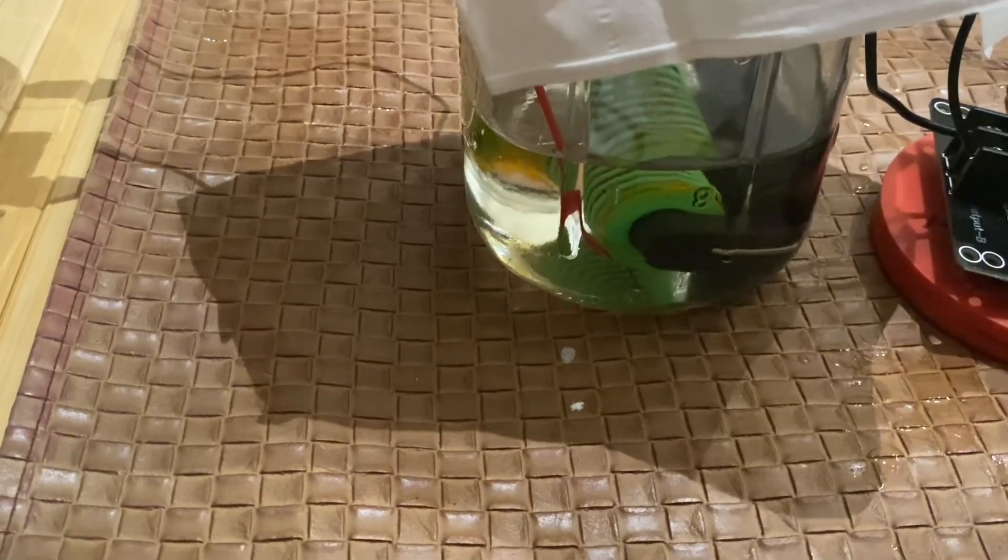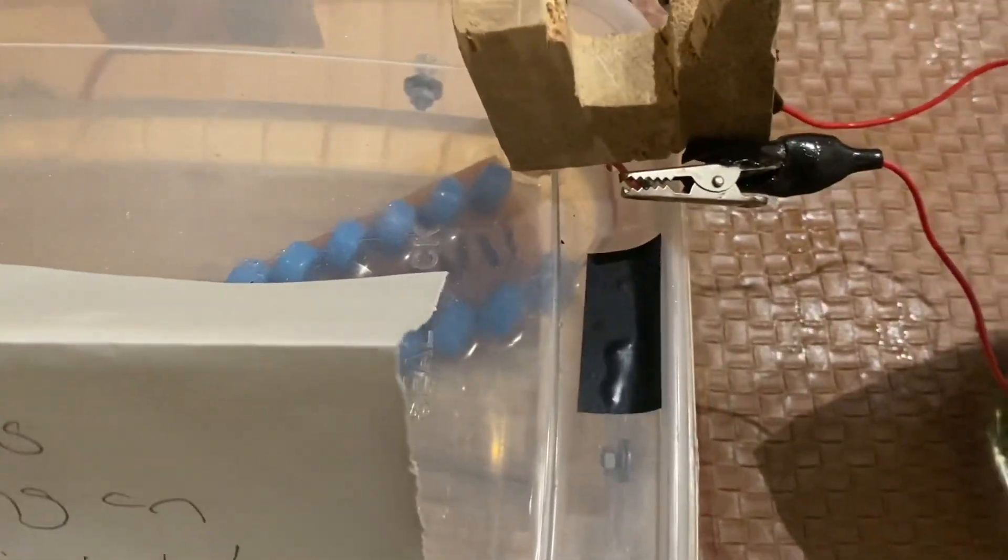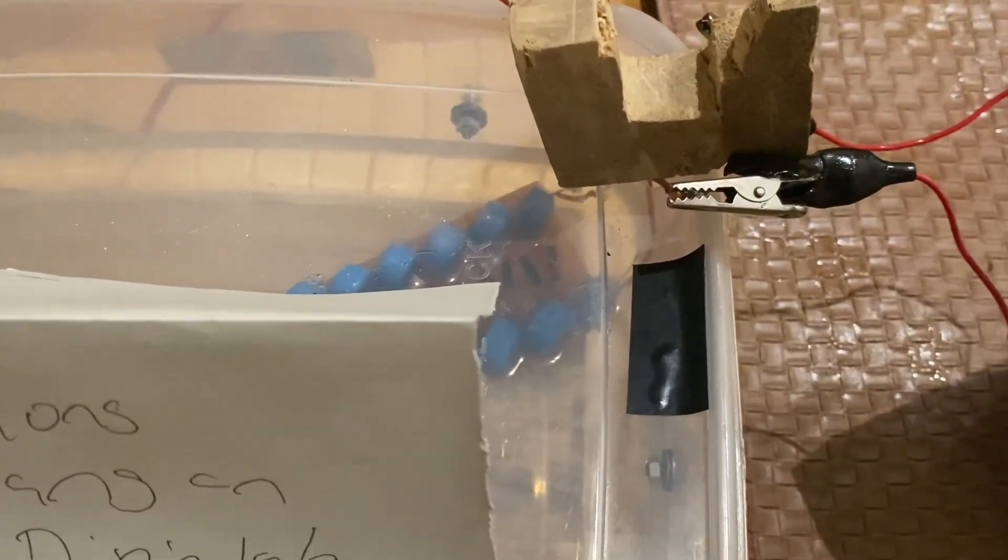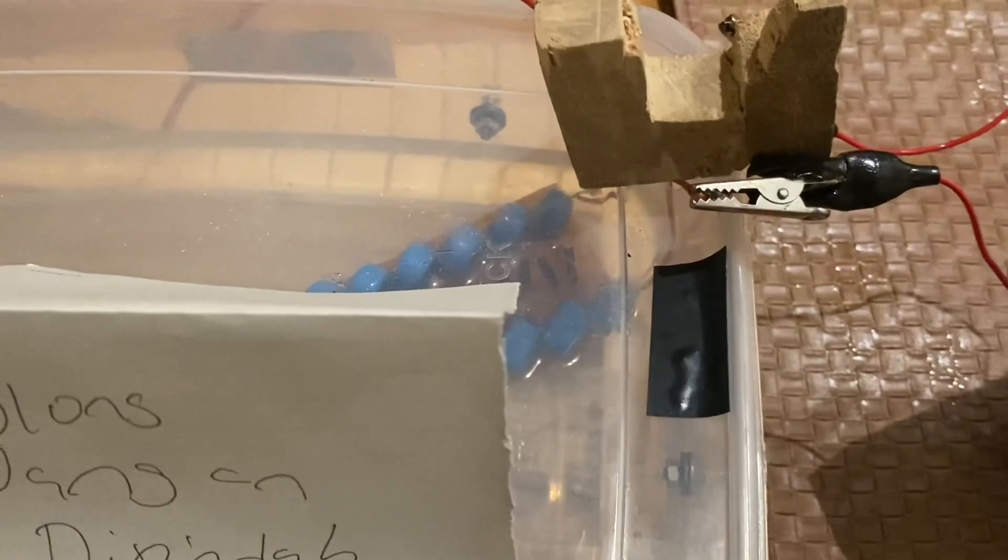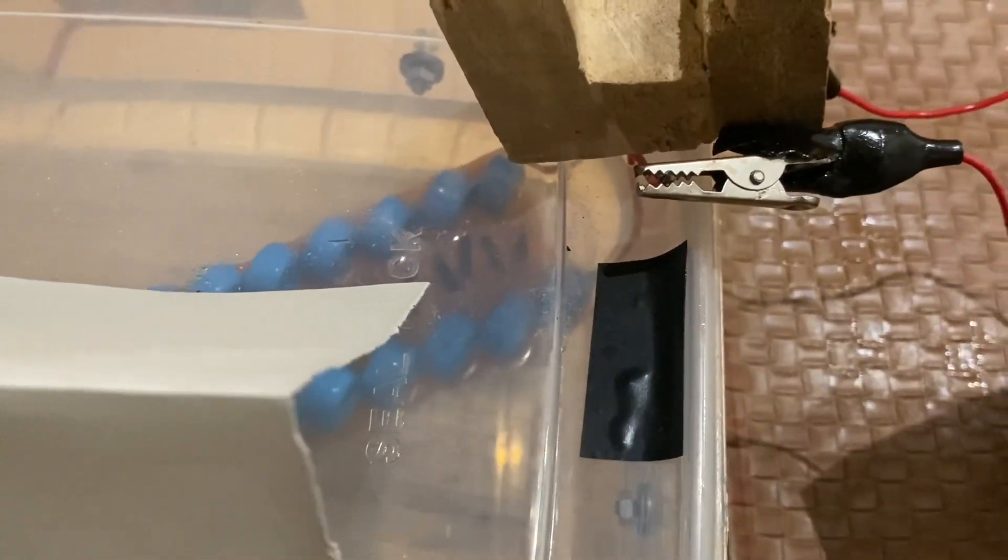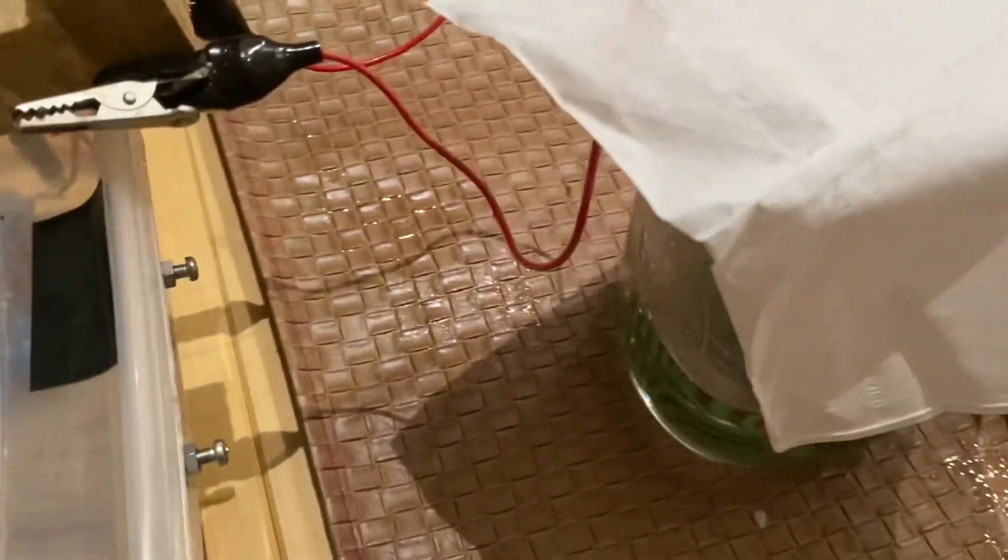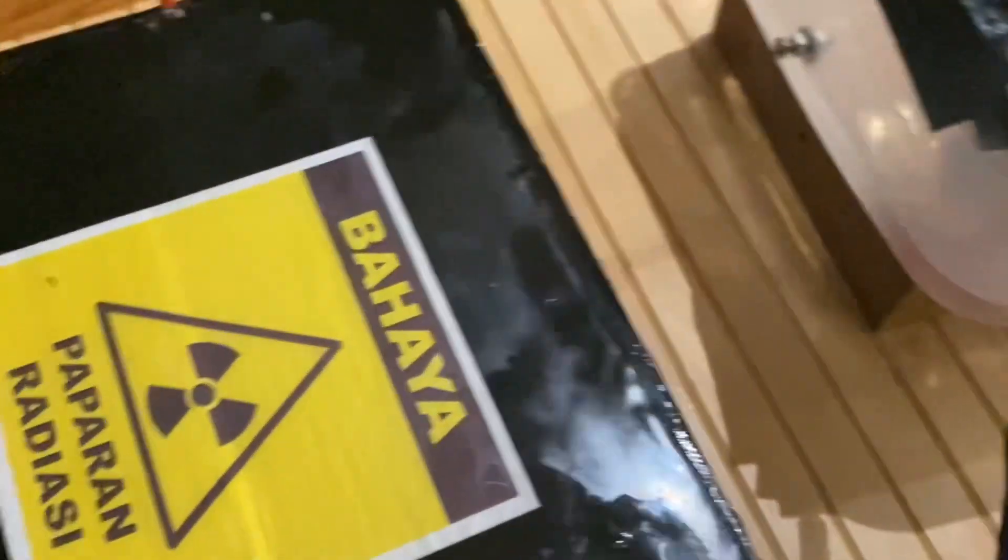I then replaced it with this 3D printed bobbin. Now this goes into the multiplier, which I calculated I needed around 15 stages to multiply it. I'm using these 20 kilovolt capacitors and 20 kilovolt diodes. I think you need around twice the rating of your transformer, but I'm not quite sure.